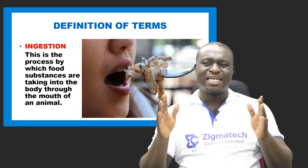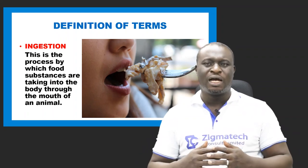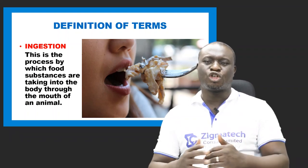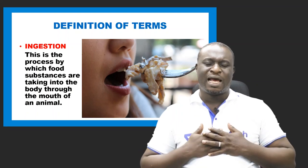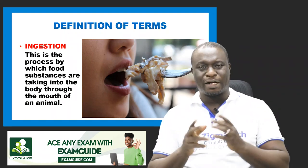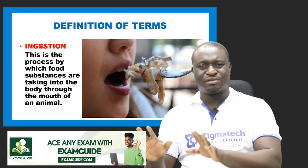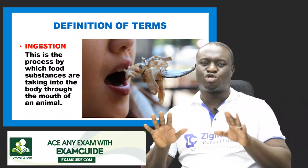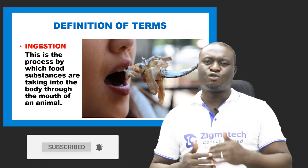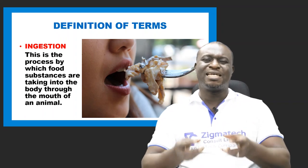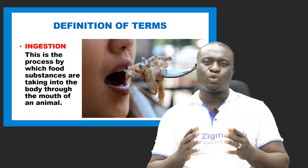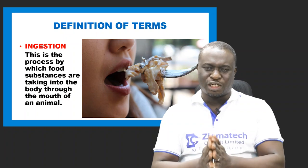Let's start with the first one: ingestion. Ingestion is the process by which food substances are taken into the body, usually through the mouth of an animal or organism. So it is the process by which food substances are taken into the body through the mouth of an animal — that is what we define as ingestion.